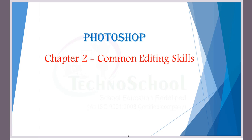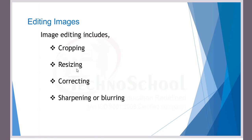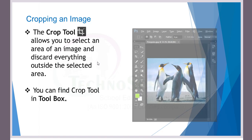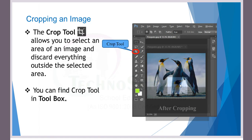Now let's have a quick look at section 3 and continue with section 4. In section 3, we covered chapter 2 common editing skills — specifically editing an image, cropping, and resizing in detail. Today's section we are going to see about correcting an image as well as sharpening or blurring an image. Cropping an image — this is the crop tool — we all know how to use it.